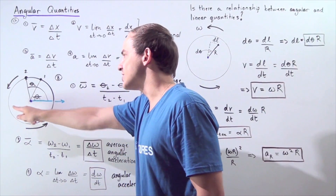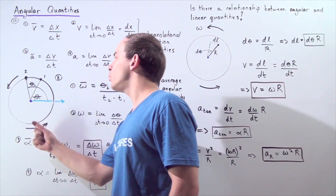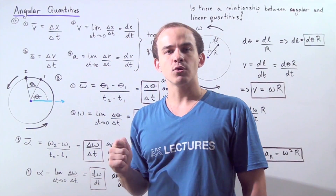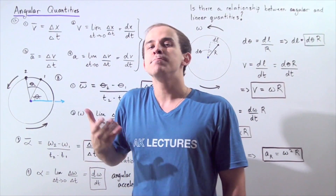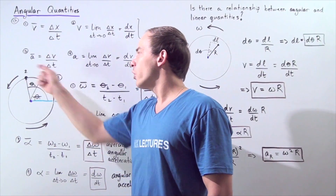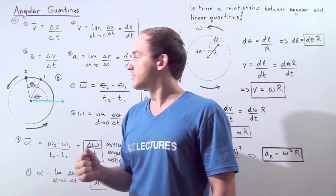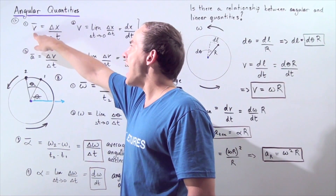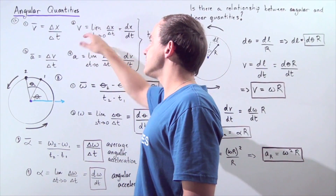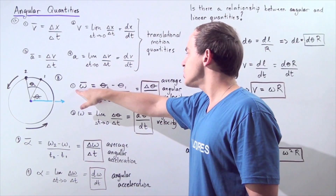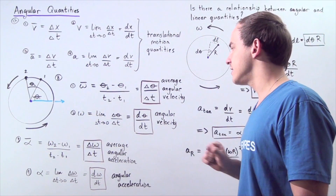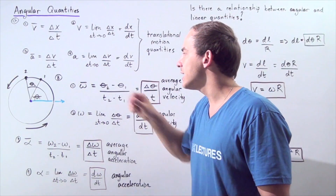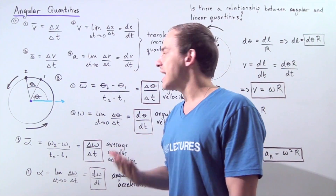Notice the angle increased, and that's exactly why we say when the object rotates in the counterclockwise direction the direction is positive — because the angle that this point makes increases. In the same way that we spoke about average velocity and instantaneous velocity, we can talk about average angular velocity and instantaneous angular velocity, given by the Greek symbol lowercase omega.